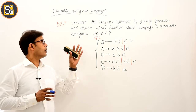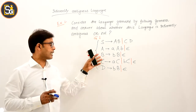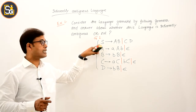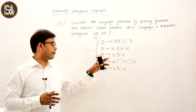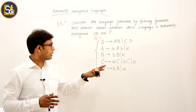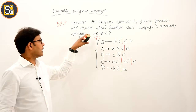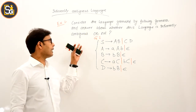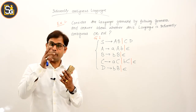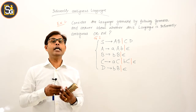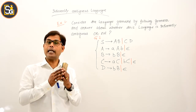Consider this example. The question says: consider the language generated by the following grammar. The grammar is given, and S is the start symbol. Capital A, B, C, and D are the non-terminals, and small a, small b, and epsilon are the terminals. The question asks us to answer whether this language is inherently ambiguous or not. As I mentioned, 'inherently ambiguous' is a property of languages, not grammars — grammars are never inherently ambiguous, only languages can be inherently ambiguous.